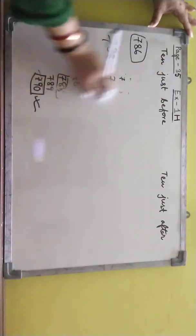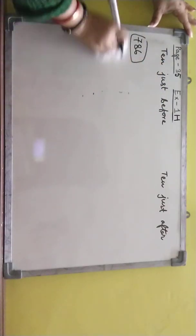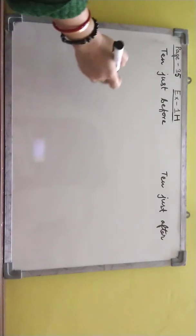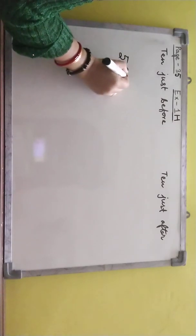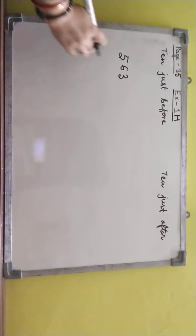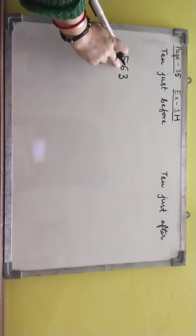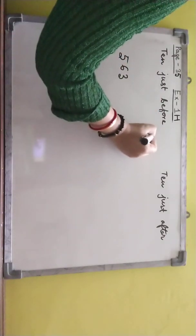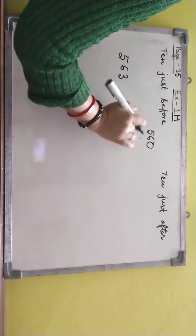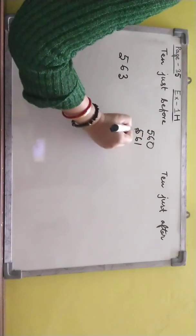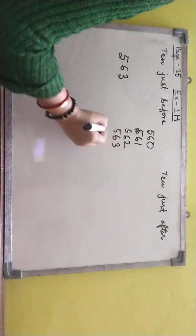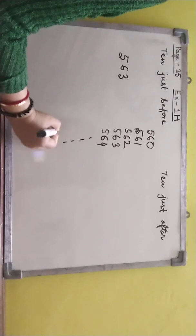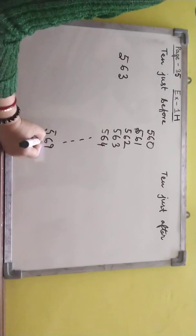Now another example I am giving you: 563. So which number, this is in tens place, 63. That means 60, from 60 we will start, 560, 561, 562, 563, 564, 569, 570.